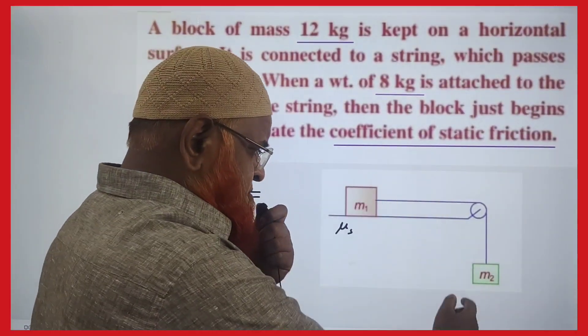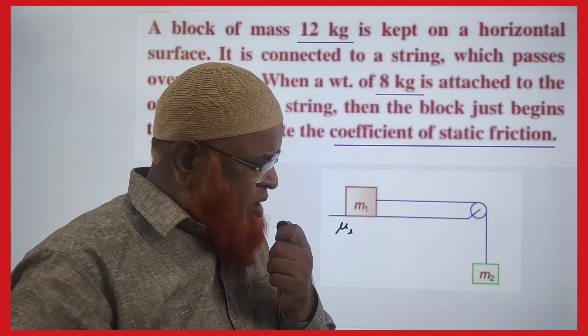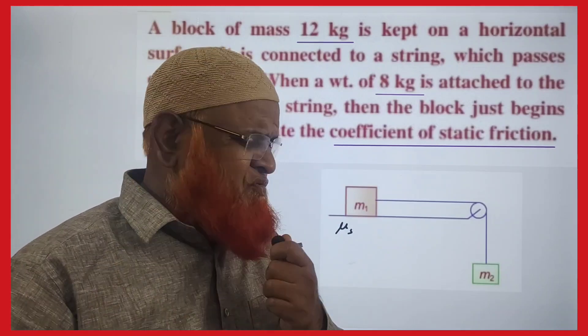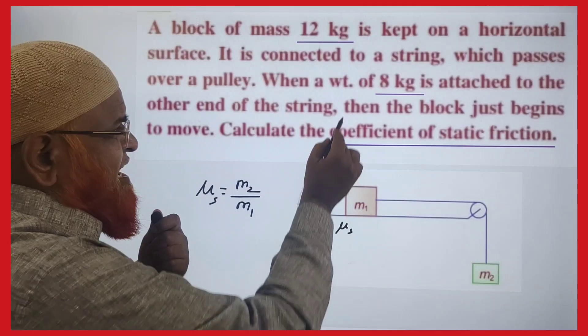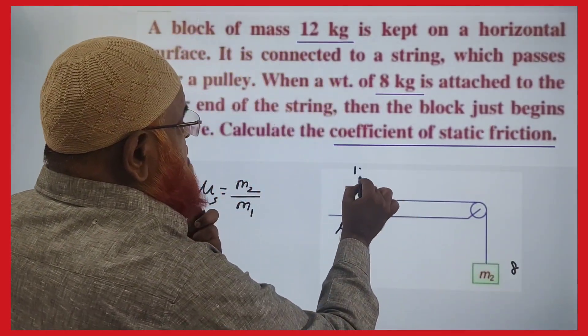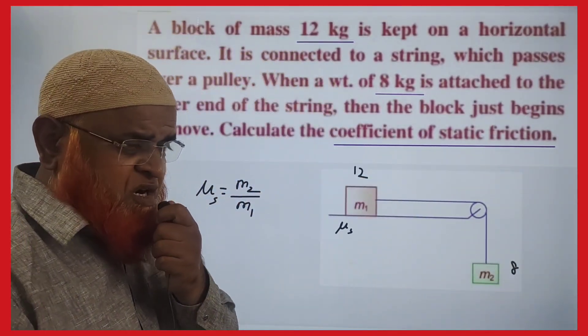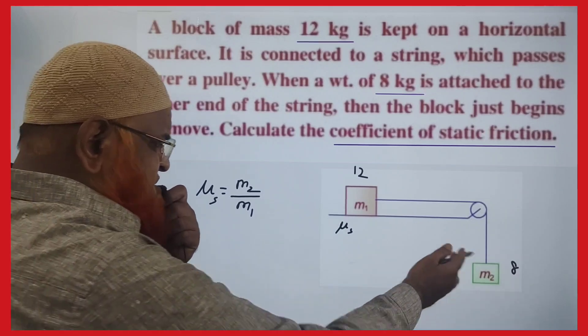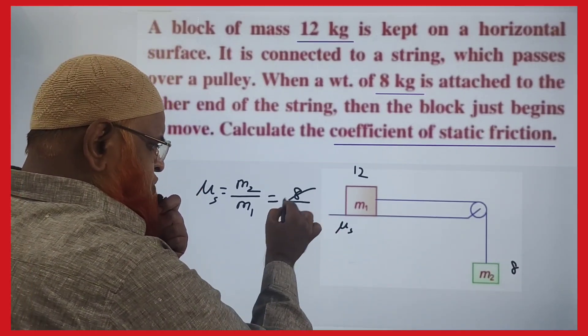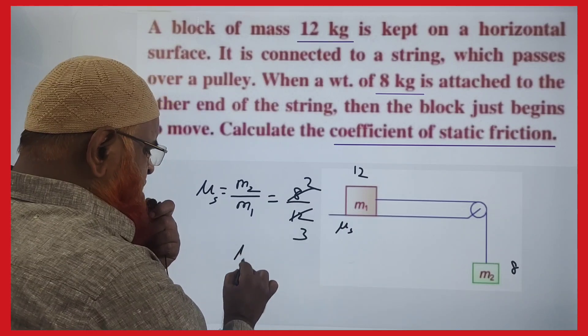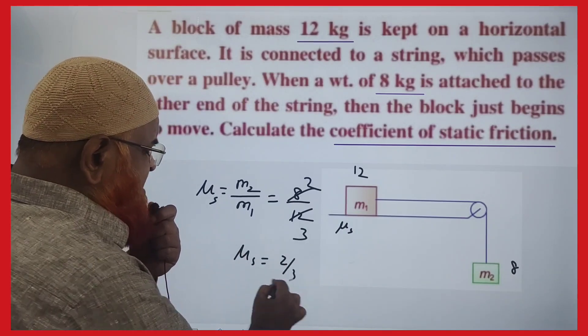My friends, in this system, one block is hanging, one is resting on the table. How can you find out the coefficient of friction between these two if you know just that this is going to be 8 kg and this is going to be 12 kg? You have to find out the coefficient of friction. It's very simple. Just divide them. It is 8 by 12 is going to be your answer. So coefficient of static friction is 2 by 3, that's it.